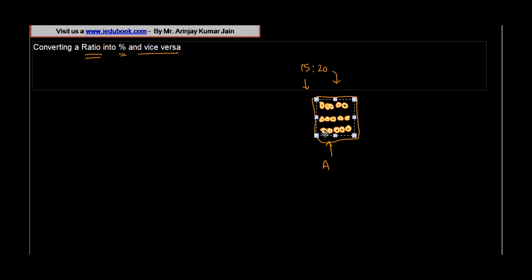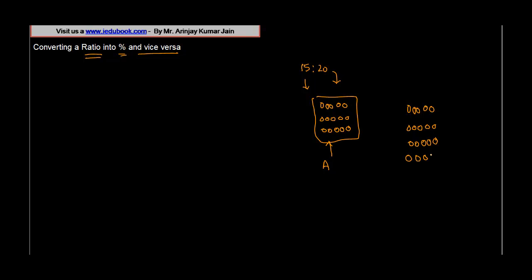15 is to 20. Ratios basically depict what is the relative quantity of one vis-a-vis another. So let's say this is the ball box which is owned by team A. Just to ensure I don't make all these balls again, I'll copy them and paste them over here. Similarly, there's another team B which has 20 balls.